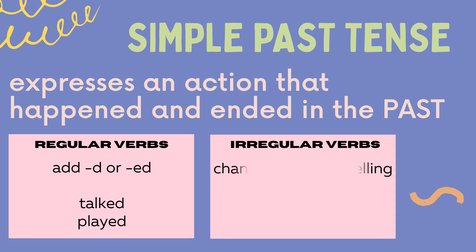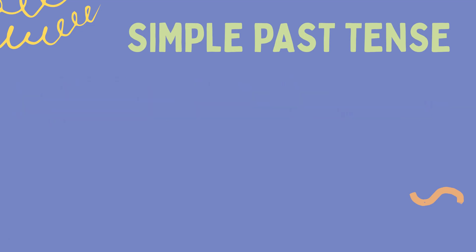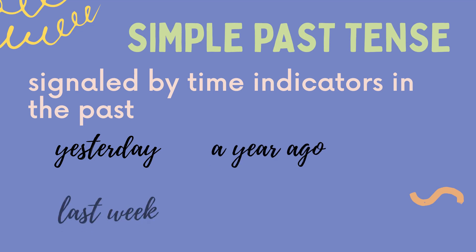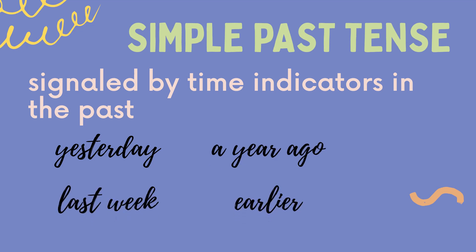For irregular verbs, we usually change or retain their spelling. For example, 'became' and 'set.' The Past Tense of 'become' is 'became,' and the Past Tense of 'set' is also 'set.' The Simple Past Tense is signaled by time indicators in the past, such as: yesterday, a year ago, last week, and earlier.